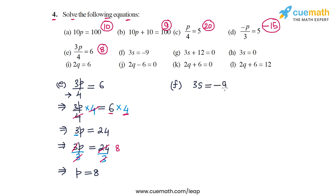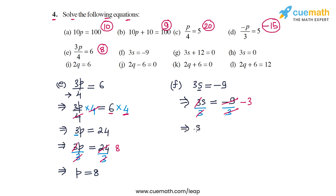In part f the equation is 3s equal to minus 9. To separate out the variable s we divide by 3 on both sides. On the LHS the 3s cancel out and on the RHS minus 9 by 3 is minus 3, so we are left with s equal to minus 3. The solution in part f is s equal to minus 3.